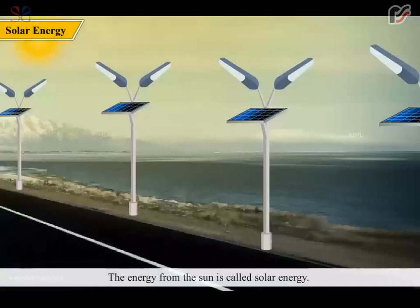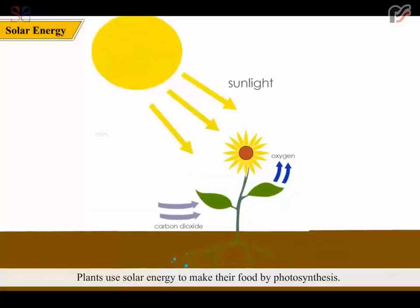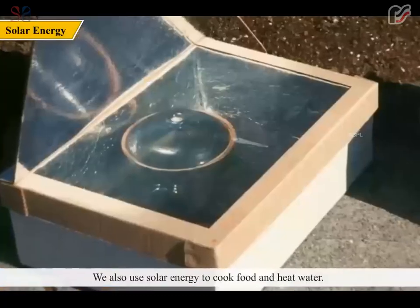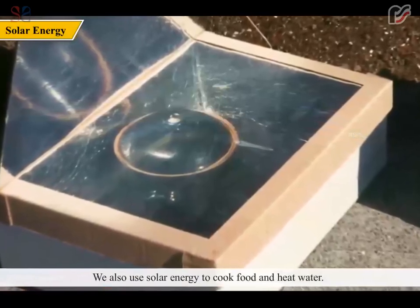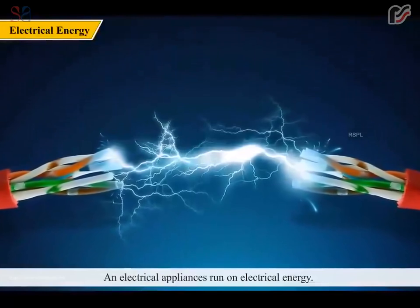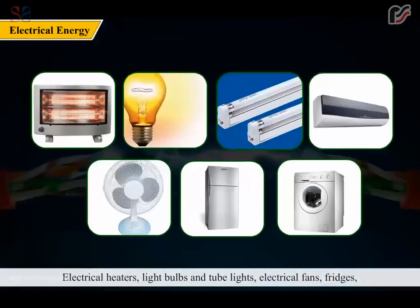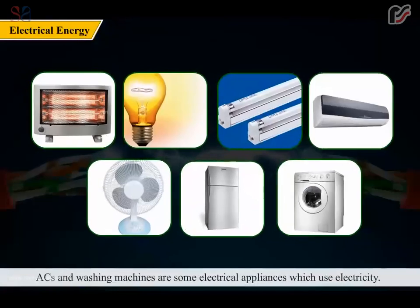The energy from the sun is called solar energy. Plants use solar energy to make their food by photosynthesis. They also use solar energy to cook food and heat water. Electrical appliances run on electrical energy — electrical heaters, light bulbs, tube lights, electrical fans, fridges, ACs and washing machines are some electrical appliances which use electricity.